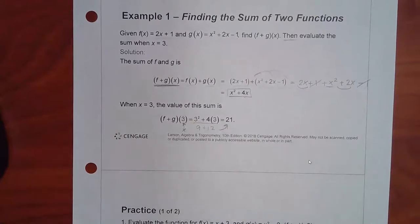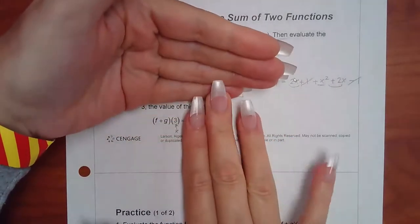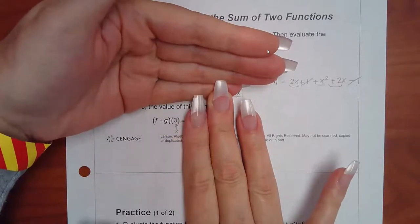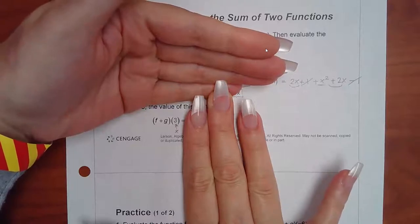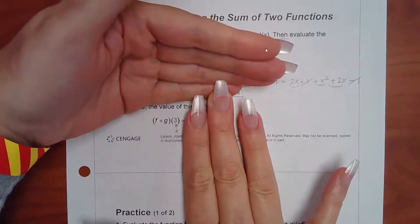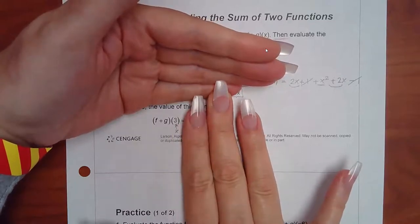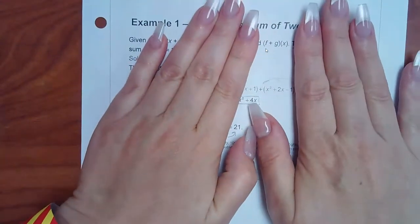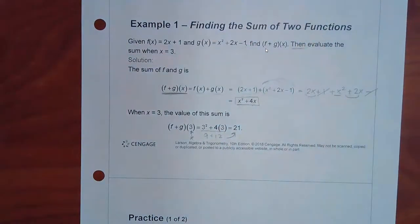This is what I meant by two different kinds of problems. Sometimes they'll ask you for a combination by itself and already have a number right there. You can do the problem a little faster if they give you that number. If they don't give you a number, it says just x, and then you have to do it algebraically — plug in the whole function, simplify it.